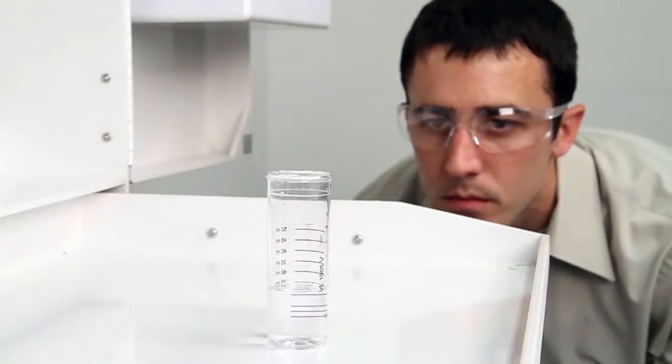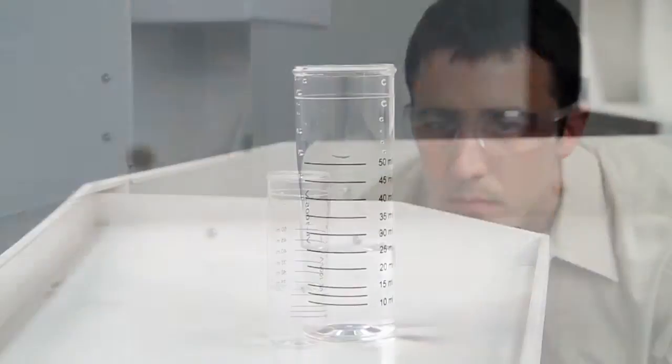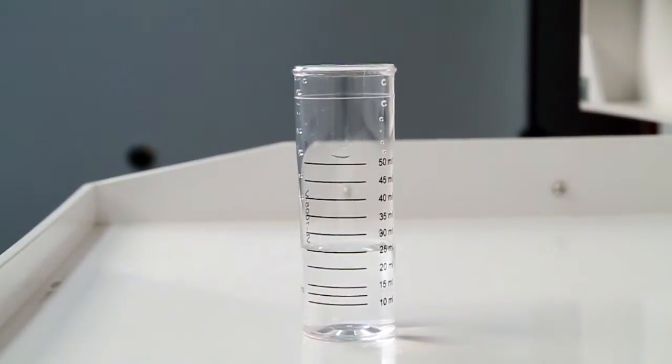When performing a drop count titration, a white background can provide contrast to better see the color changes. A cabinet tray or a white paper towel can provide that contrast.